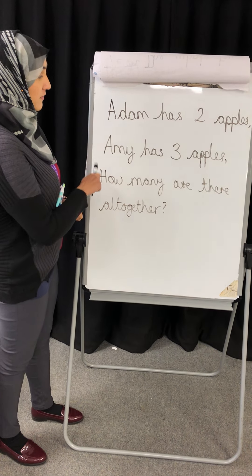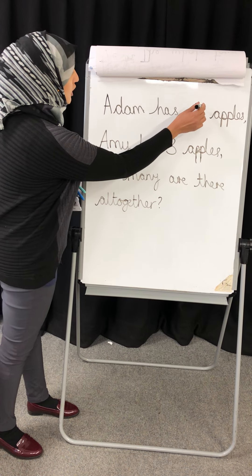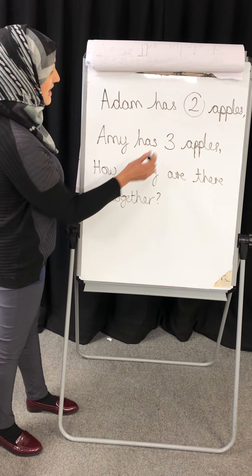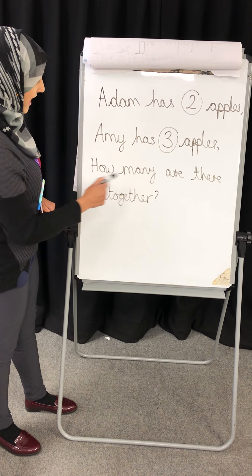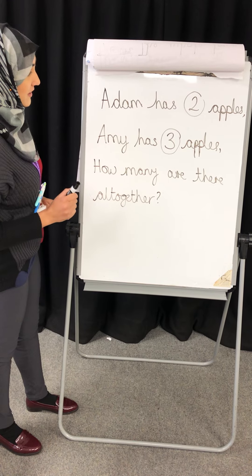Let's look at this word problem on the flip chart. It says Adam has two apples, Amy has three apples. How many apples are there all together?